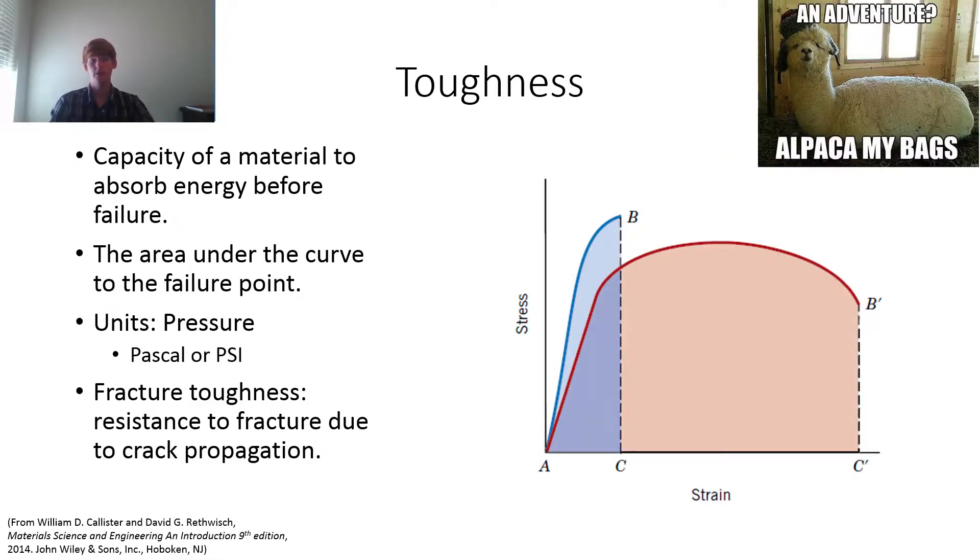So toughness. If resilience was how much energy it takes before it begins to plastically deform, toughness is how much total energy the material can take before it breaks. So in turn, this is the area under the curve to the failure point. This is in pressure. There's also something called fracture toughness, which is pretty much resistance to a fracture because of cracks. We're not going to talk about it in this video, but just know that there are different types of toughness.